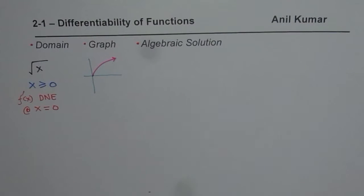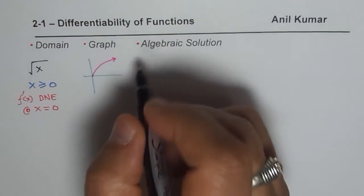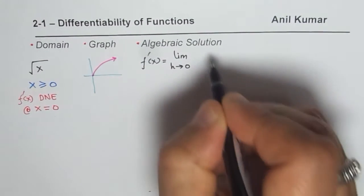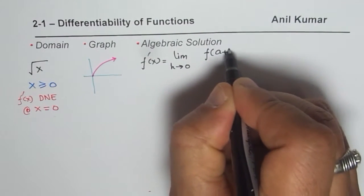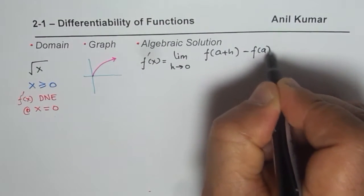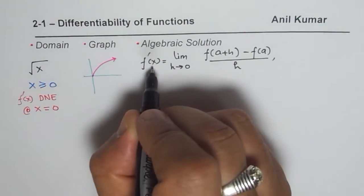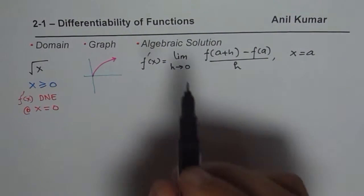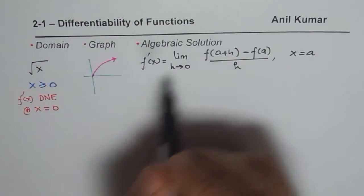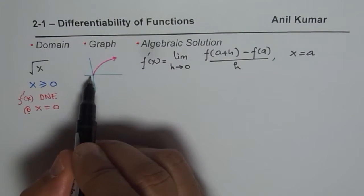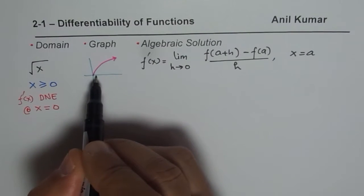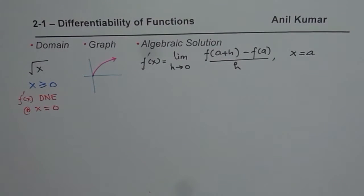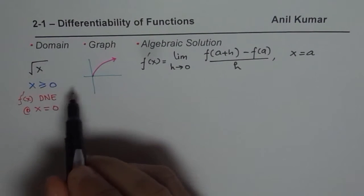When I say limit, I am going back to the basic definition of differentiability: f'(a) equals the limit as h approaches 0 of [f(a+h) minus f(a)] over h. Since we are trying to figure out at which point it is not differentiable, if I approach this point from the left side it does not exist, but from the right side it does. Since this limit does not exist, we say algebraically that the function is not differentiable at this particular point.